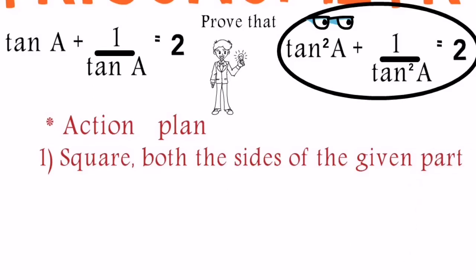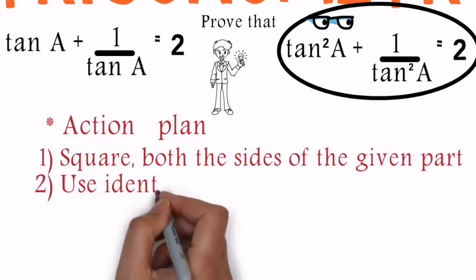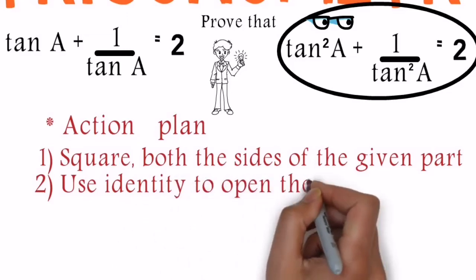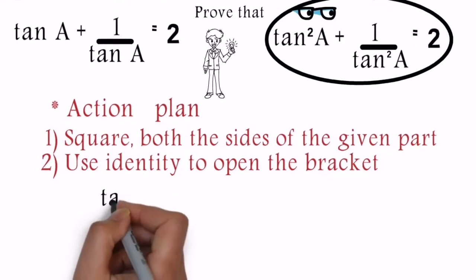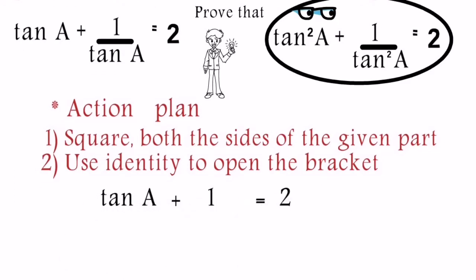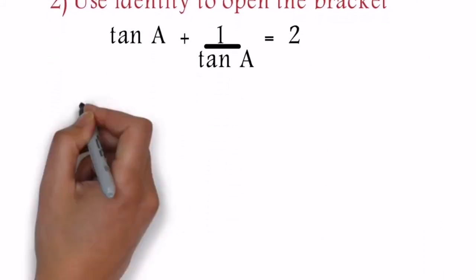After that, we will use identity to open the bracket. Don't forget identity to open the bracket. Now let's move on with the given section, write it down the way you can see on the screen, and the way we have first step squaring on both the sides.